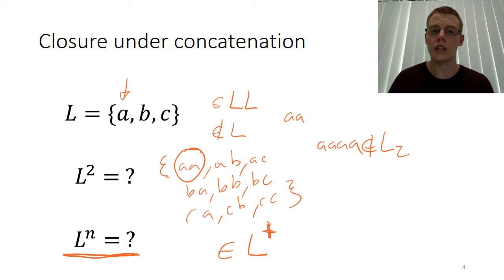So now we know that L Kleene plus is the smallest set that contains all of the elements from L that is closed under concatenation. So by our previous definitions, we know that L Kleene plus is the closure of L under concatenation.